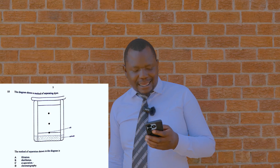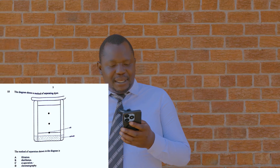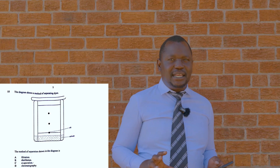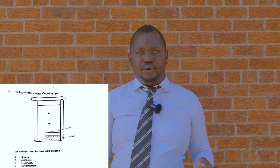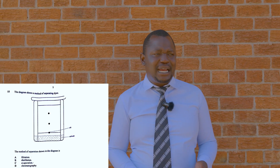Starting on question number 15: the diagram shows a method of separating dyes. The method of separation shown is chromatography. Chromatography is used to separate colored substances. Filtration separates a liquid and an insoluble solid. Distillation separates liquids with different boiling points. Evaporation separates a liquid from a solid.